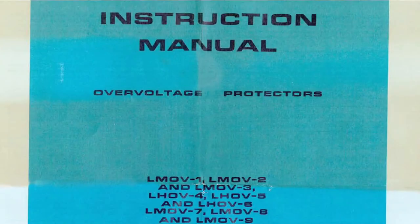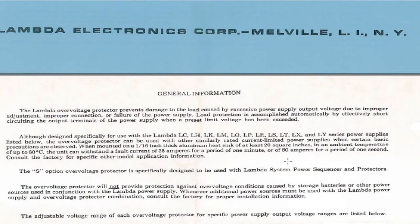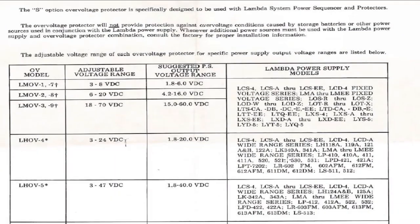So here we can see the instruction manual for the LMOV-2. It's in a bit of a sorry state but it says here the dash 2 anywhere between 6 to 20 volts, the suggested range is 4.2 to 16. And there's a list of the power supplies it came to. I've taken apart the power supply it came to and thrown it away.